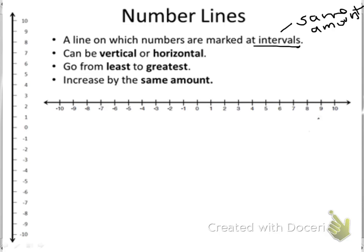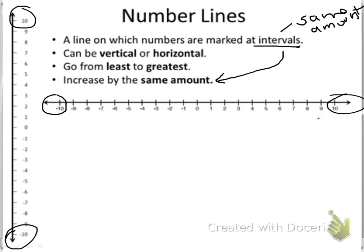They always go from least — so the least one is way down here — all the way up to the greatest. Down here we have the least, and then we have the greatest up here. The other thing about them is they increase by the same amount. That's what it means by an interval. So it doesn't necessarily always have to be one, like these ones do.